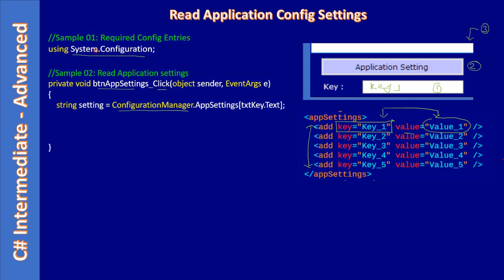In the app settings button click event, we make use of the ConfigurationManager class from the System.Configuration namespace. From there we use the AppSettings collection, which is a key-value map. We provide the key coming from the input field, and AppSettings returns the corresponding value.